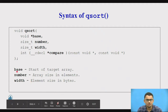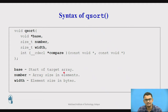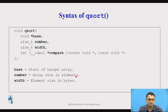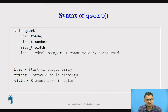The first parameter, called base, is the start of the target array — the array that we want to sort. So we pass the array we need to sort. The second parameter is the number, which is simply the size of the array. We typically store the size in an integer variable n, and this parameter is that size value.